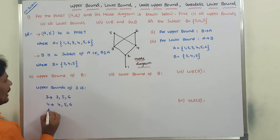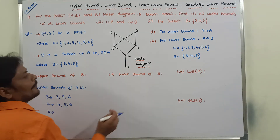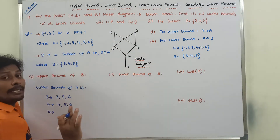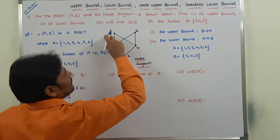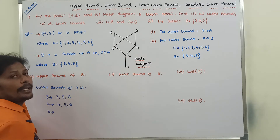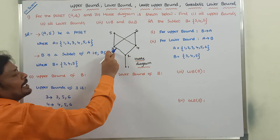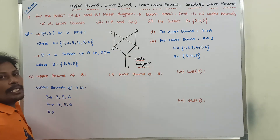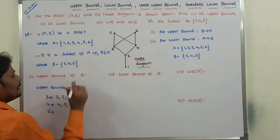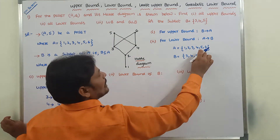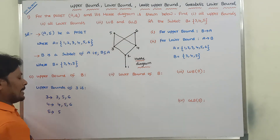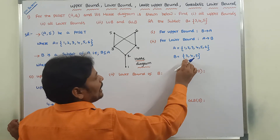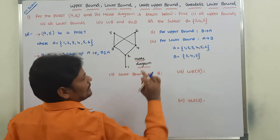Taking element 5 — 5 is related with 1, 2, 3, 4 only as downward relations, so not considered. 5 is related with 5? Yes. 5 is related with 6? There is no relation between 5 and 6. So upper bound of 5 is {5}.